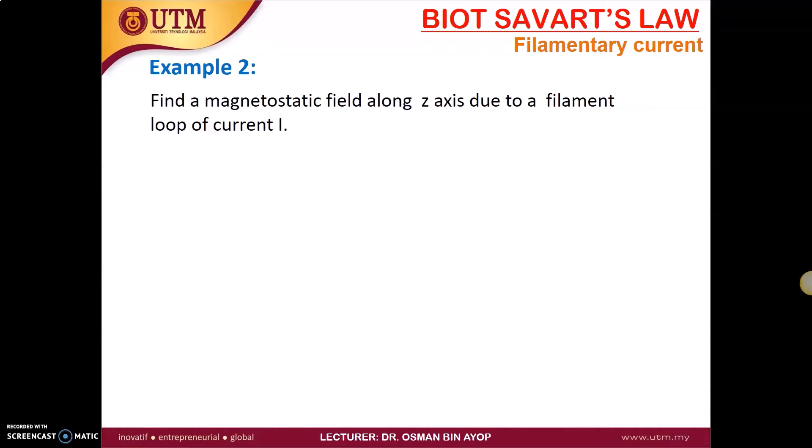For example 2, we have to find a magnetostatic field along Z axis due to a filament loop of current I. So this is the figure.